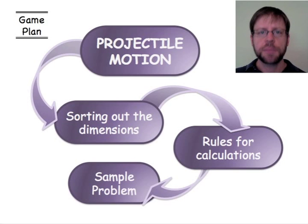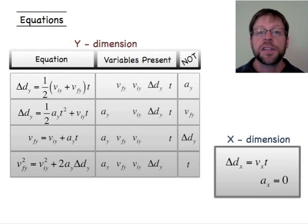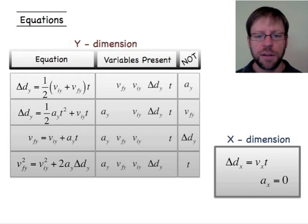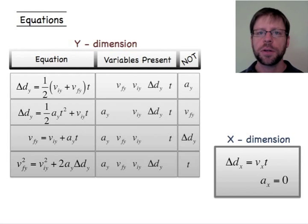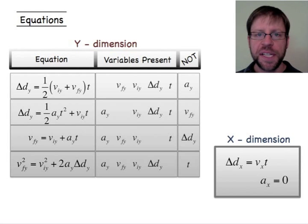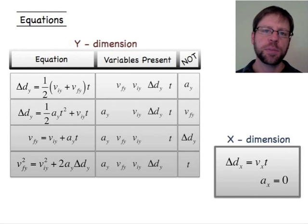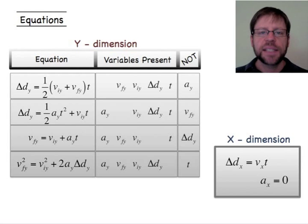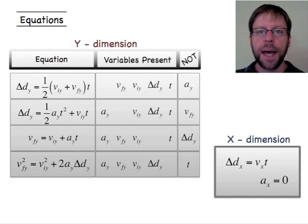Here are the kinematic equations we'll use, derived from basic Newtonian physics using area-under-the-curve and slope relationships. There are five possible variables in the y-direction equations. For the simplified x dimension with no acceleration, the equation is simply: velocity equals displacement divided by time.